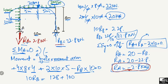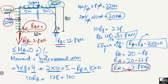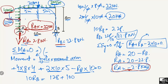Now we have found the vertical reactions RA and RB. To find the horizontal reaction RAX, note that the only horizontal load is the 4 kilonewton per meter load on the column, totalling 32 kilonewton. Since there is no other support to resist this horizontal load, the hinge at A must take the full load, so RAX = 32 kilonewton.